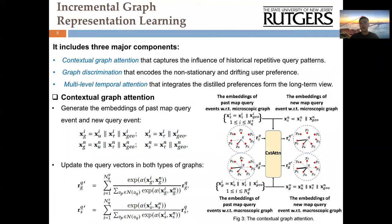To incrementally model the user's shifting query preferences, the incremental graph representation learning module is proposed with three important components. The first one, contextual graph attention, aims to update the query vectors in both macro and micro graphs by considering the past similar query events. For instance, given a new incoming query, the matched POIs of the historical queries that possess a similar situational context tend to be recommended by allocating a higher query-POI edge weight through the underlying contextual attention function.